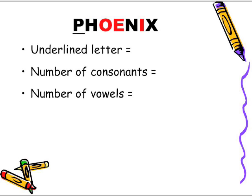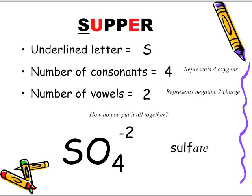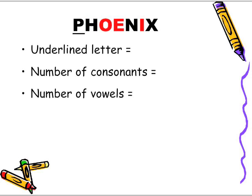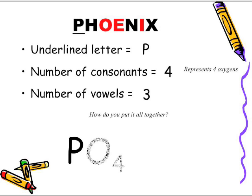And lastly, "phoenix" — it's very important that you know how to spell "phoenix," and same with "supper" — don't forget the extra P. The underlined letter is P. Number of consonants: four. Number of vowels: three. So P with four oxygens gives PO4, and three vowels give three negative charges: PO4 negative three. It's a derivative of phosphorus, and with oxygen present, we call it phosphate.